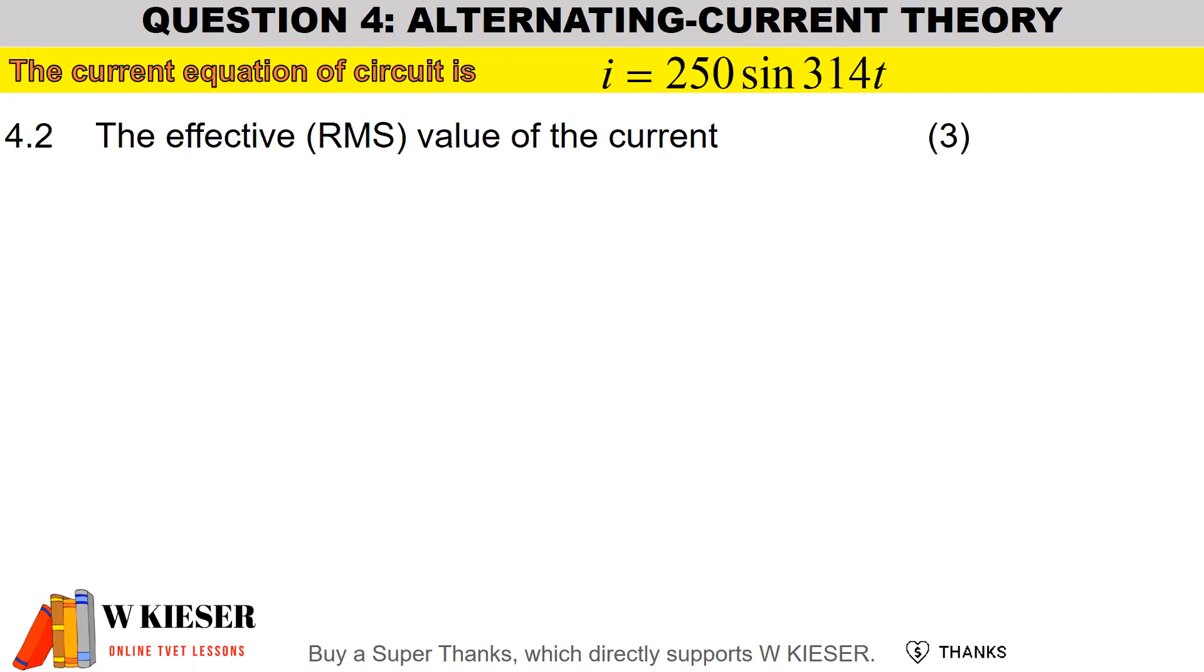In question 4.2 we need to calculate the effective value of the current which is the RMS value. To calculate the effective value it is 0.707 multiplied by the maximum value. 0.707 multiplied by 250 amps, therefore the RMS value is 176.75 amps. Just remember to check that answer for me.